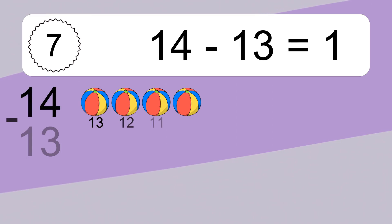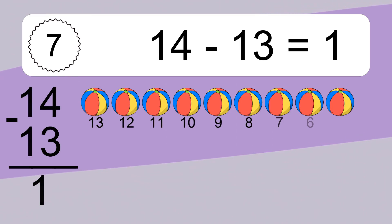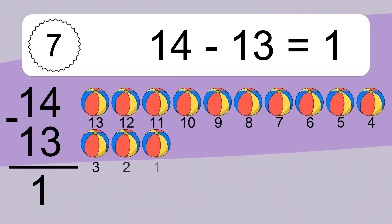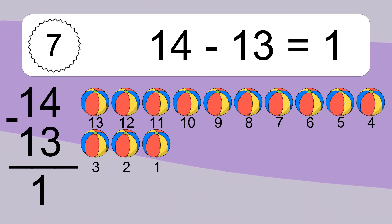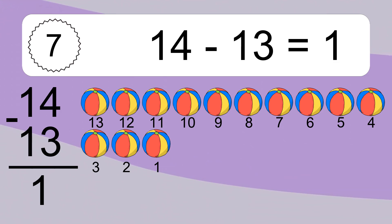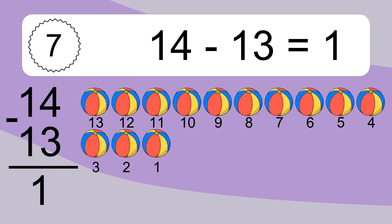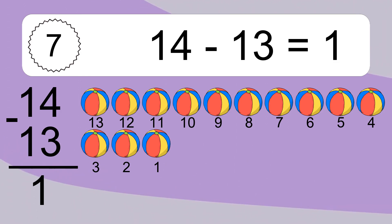14 minus 13 equals what? 14 minus 13 equals 1. Let's count it. 13, 12, 11, 10, 9, 8, 7, 6, 5, 4, 3, 2, 1.